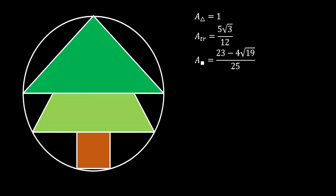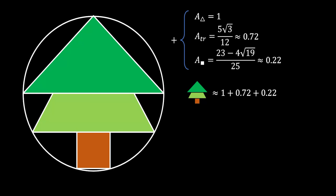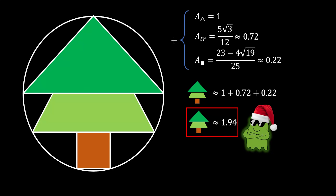Great. Now we can easily find the area of our Christmas tree, but before we do that, I am going to approximate those values, because those things look really awful. I know a lot of you do not like approximation — trust me, I am not a fan of it either — but what the hell, it's Christmas. So let's approximate the area of the trapezium to 0.72 and the area of the square to 0.22. We add those three areas and get that the area of the Christmas tree is equal to 1.94 square units, and this is our solution.